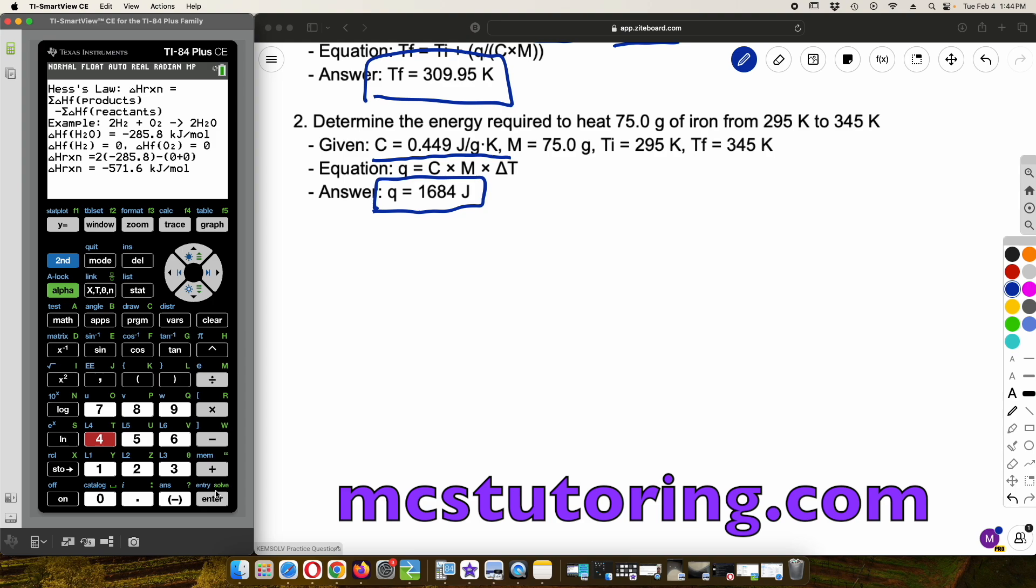So, we get negative 571.6 kilojoules per mole. So, I just gave an example of Hess's law. If you would like me to incorporate Hess's law into the solver part of this, let me know, and I will do it. And that will be part of ChemSolve 4 or ChemSolve 5 when that iteration comes about.